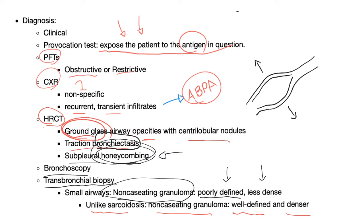Here is a key exam question: a 39-year-old farmer was working in a closed room full of moldy hay. Four hours later he developed dyspnea, cough, fever, malaise, and fatigue. A transbronchial biopsy shows a non-caseating granuloma that's poorly defined and less dense. The diagnosis is farmer's lung. If you see a non-caseating granuloma, this is a chronic condition due to chronic exposure — meaning this is not his first time contacting the moldy hay.